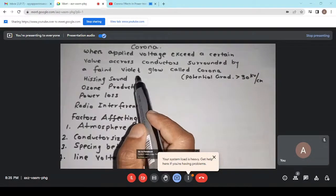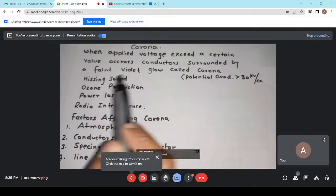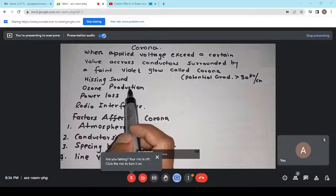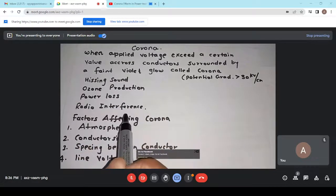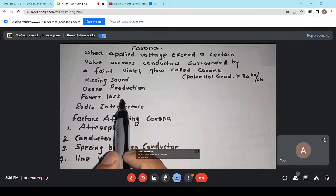It is specially visible in the overhead transmission line. The phenomena of corona will be hissing sound, some ozone production, power loss and radio interference. So, these are the phenomena accompanied by the corona.